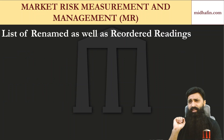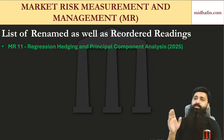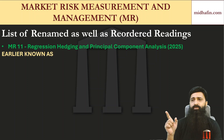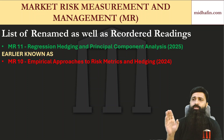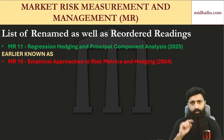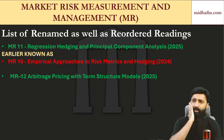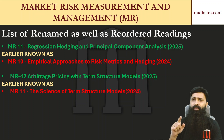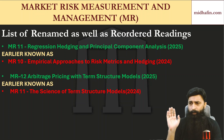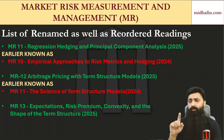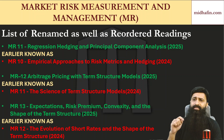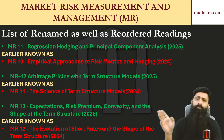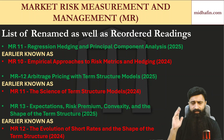Some chapters have been both renamed and reordered. 'Regression Hedging and Principal Component Analysis' in 2025 was previously known as 'Empirical Approaches to Risk Metrics and Hedging' in 2024 — it was also MR10. MR12 is now 'Arbitrage Pricing with Term Structure Models,' previously called 'Science of Term Structure Models.' And MR13 is now 'Expectations, Risk Premium, Convexity and the Shape of the Term Structure,' which was previously 'Evolution of Short Rates and the Shape of the Term Structure' at number MR12 in 2024.